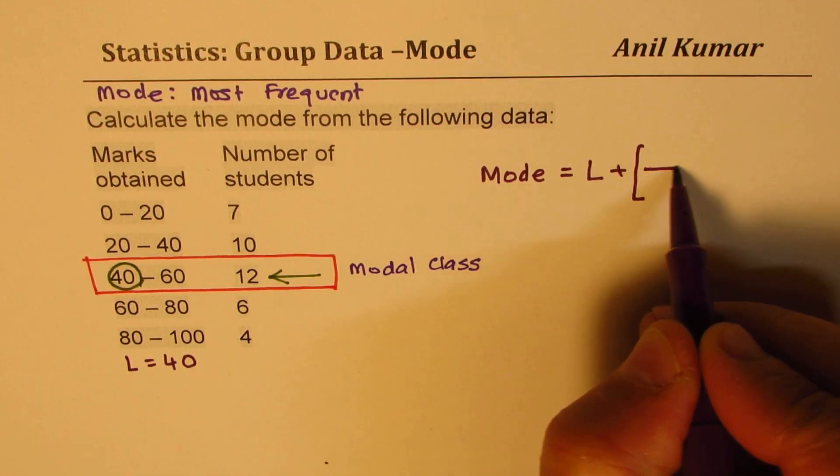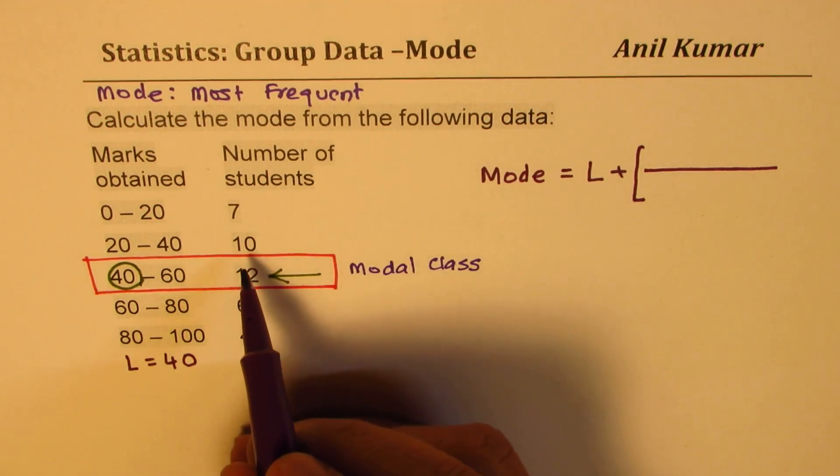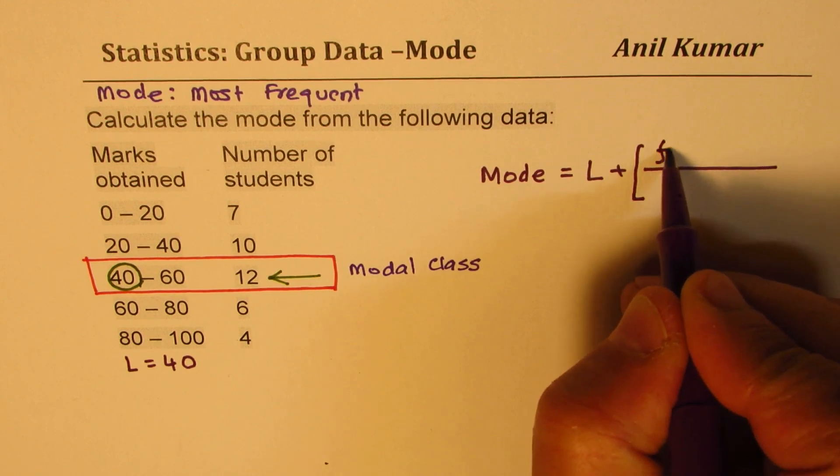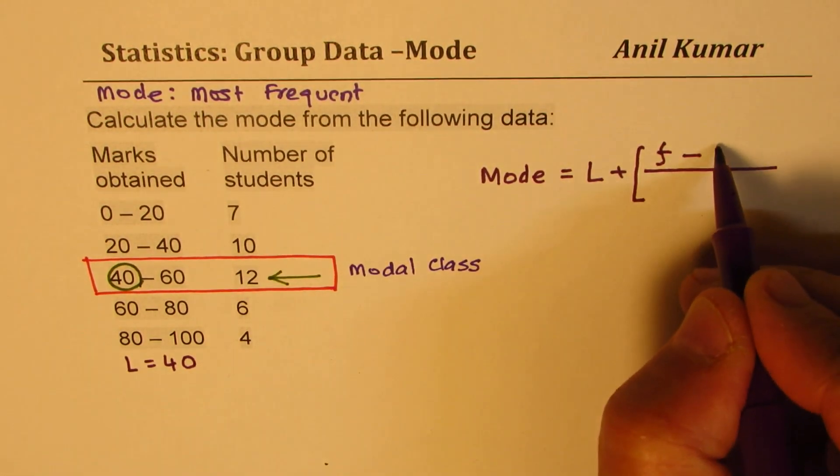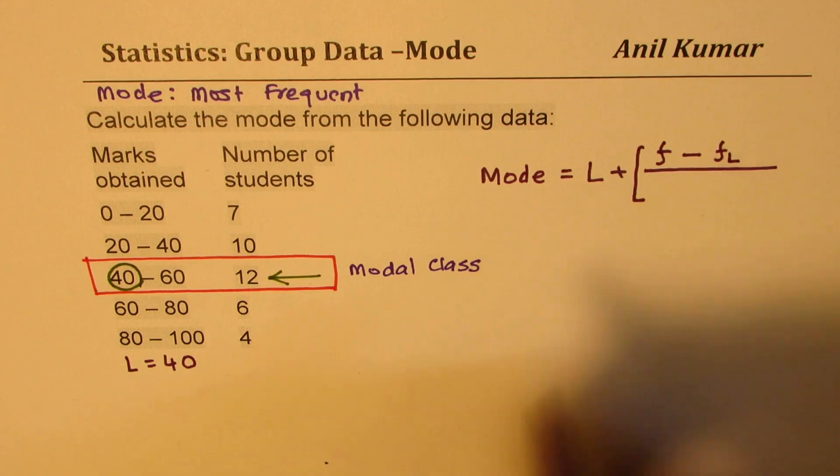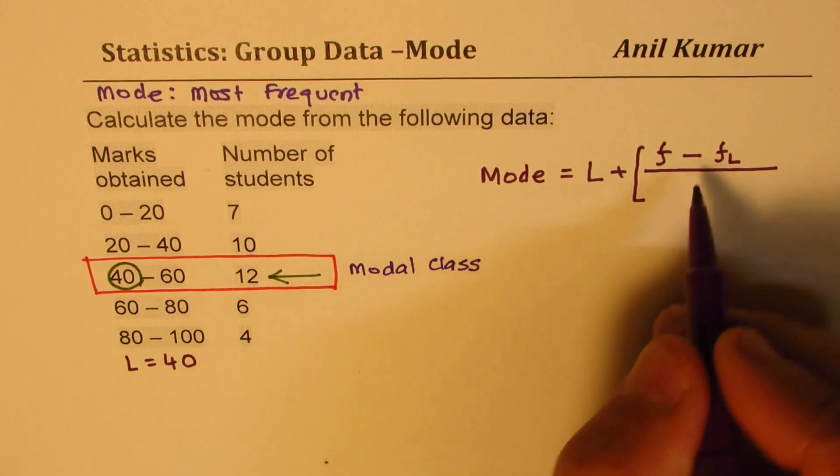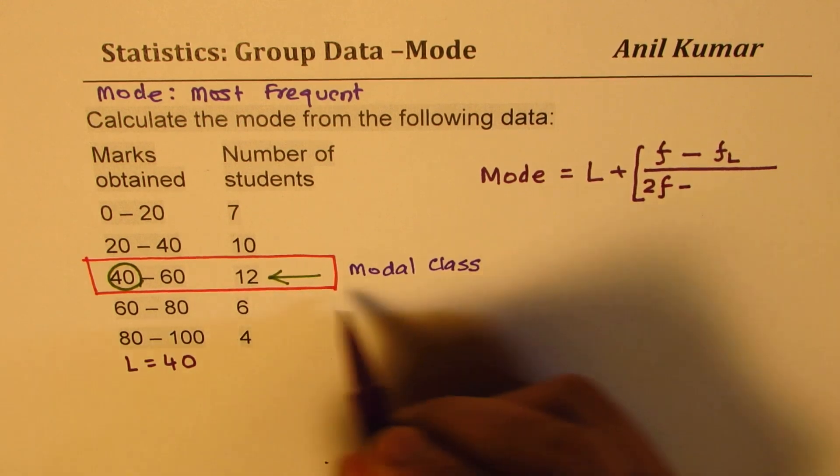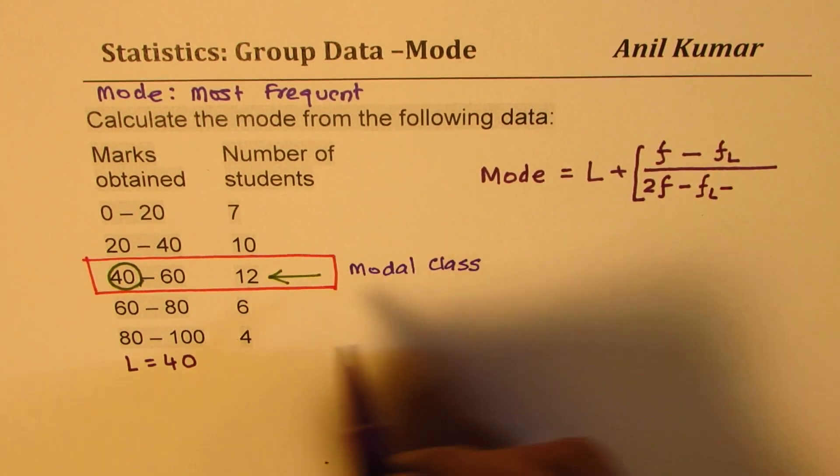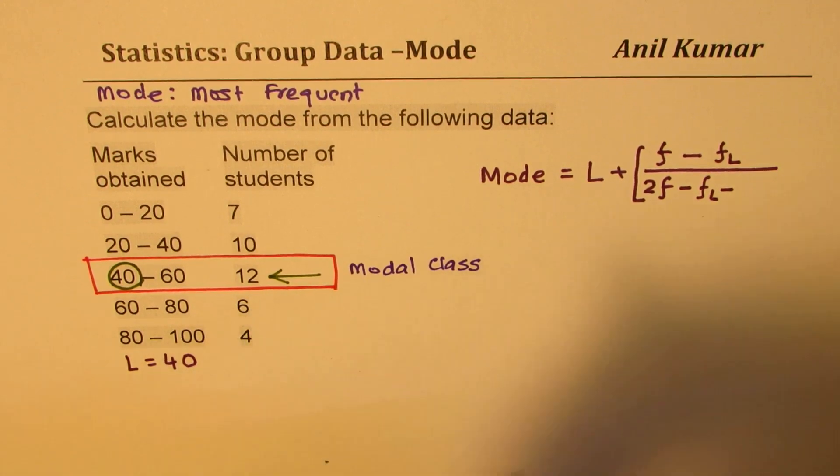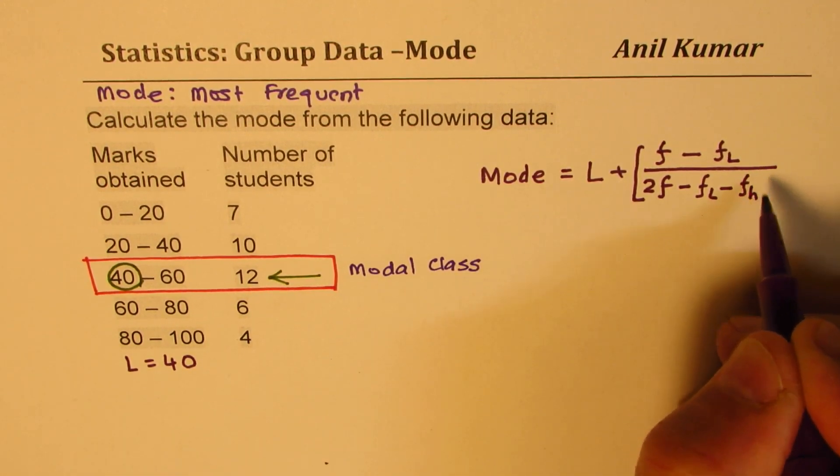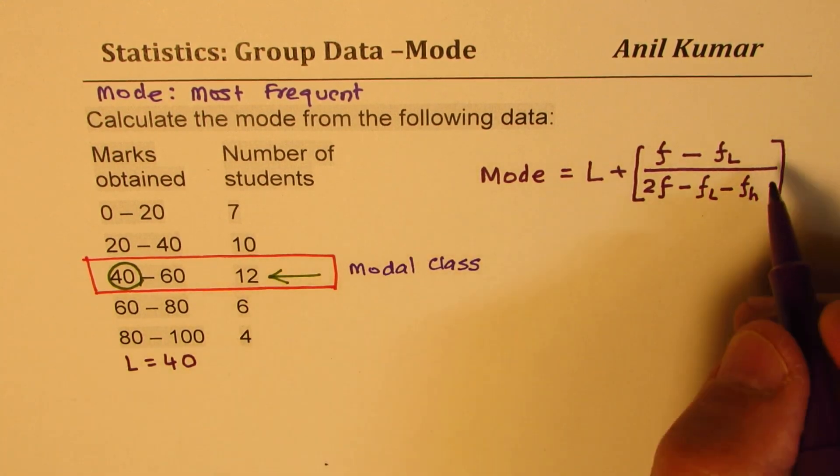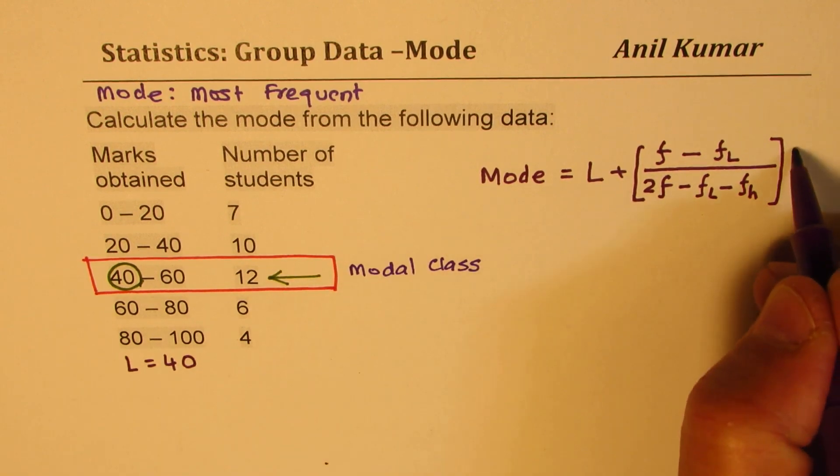This is the modal frequency. Let's call this as F minus the one lower to that. So I'll say FL. And in the denominator, we kind of average it out. We say 2 times F minus FL and also minus FH, which is on the higher side. So L and H helps us to remember what goes where times the class interval H.